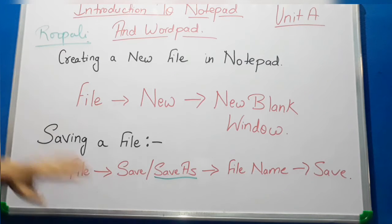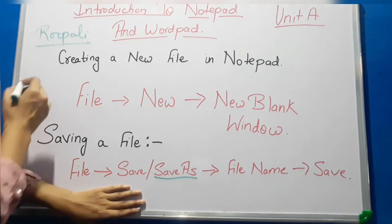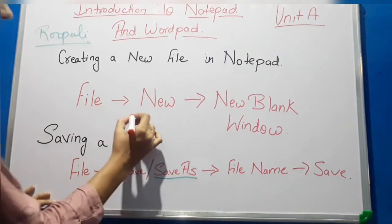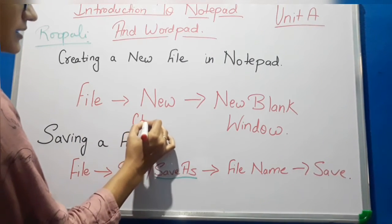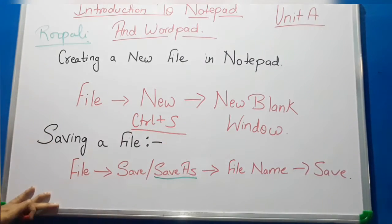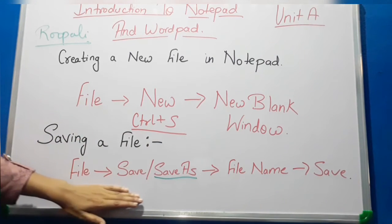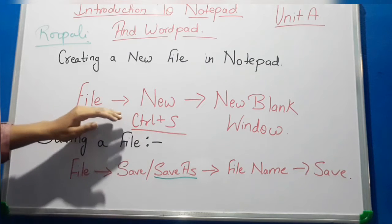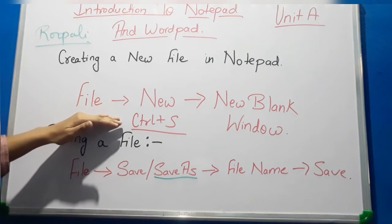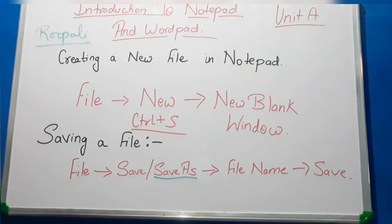If you don't want to use that long method, you can simply use the shortcut Ctrl+S. If you press Ctrl+S from your keyboard, you don't have to perform those steps — your file and whatever modifications you have made will be saved immediately.